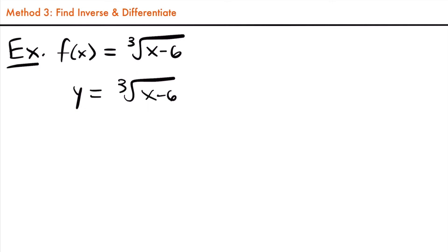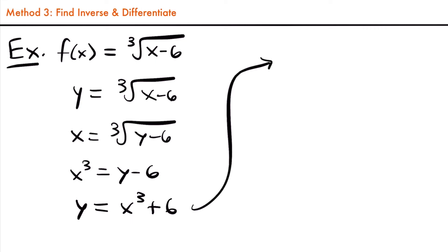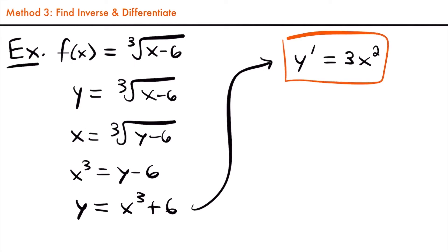Then we find the inverse of this function right away by swapping the variables: x equals the cubed root of y minus six, then solve for y. Cube both sides: x cubed equals y minus six, then add six to both sides: y equals x cubed plus six. Now we just take the derivative of this inverse function. Using the power rule on x cubed: multiply the three down, giving three times x to the power of two, subtracting one from the exponent. The derivative of six is zero since it's a constant. So y prime equals three x squared, which is the derivative of the inverse of our original function.